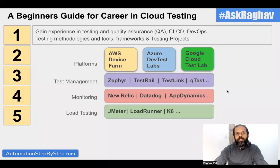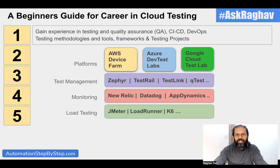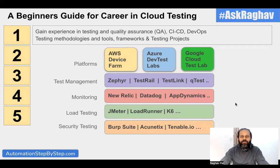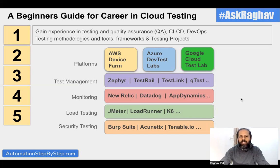When we use services on the cloud and deploy our applications, performance of these applications and services is a very important part of cloud testing. Therefore, you should have some knowledge of performance and load testing tools — you can look into JMeter, Gatling, LoadRunner, or K6. Security is also a very important part of cloud testing, so you can learn security testing tools like Burp Suite, Acunetix, and Tenable, among others. Having knowledge of one tool from each of these categories will really help you advance your career in cloud testing.